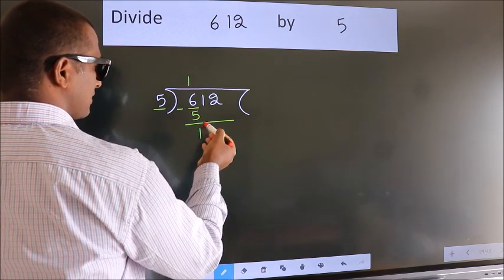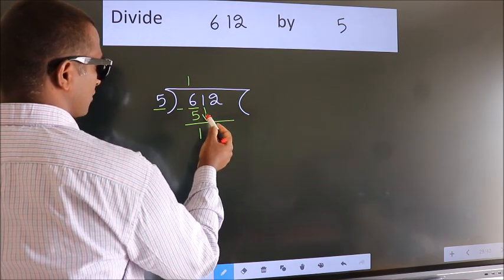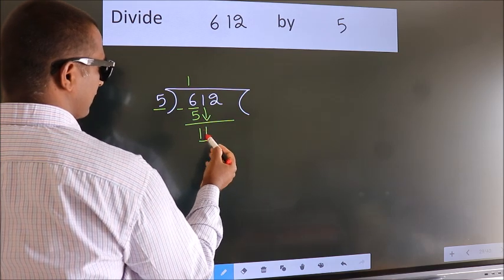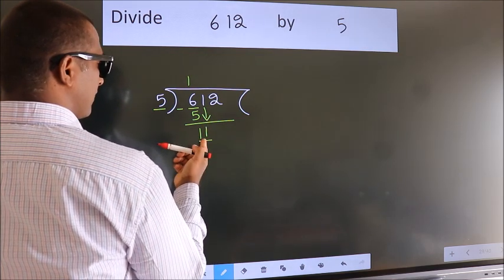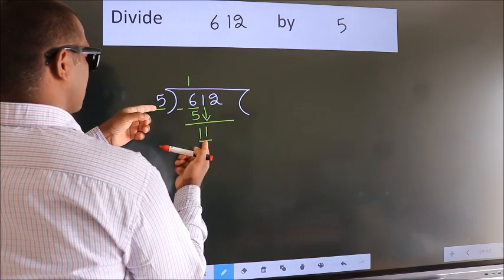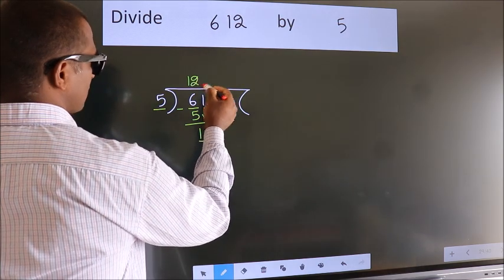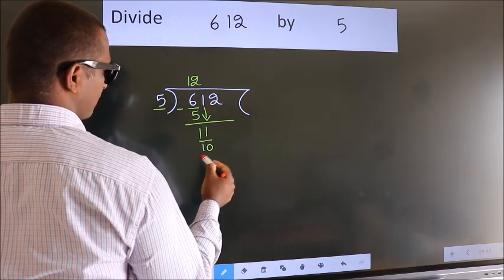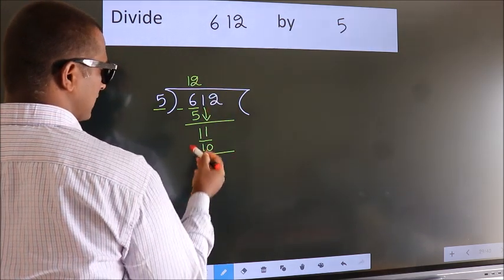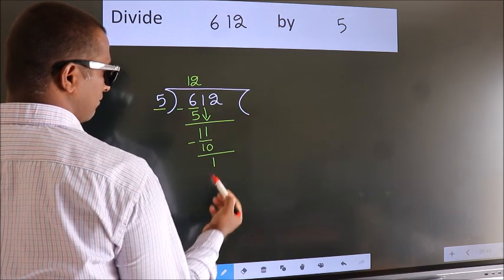After this, bring down the beside number. So, 1 down. So, 11. A number close to 11 in the 5 table is 5 twos 10. Now, we subtract. We get 1.